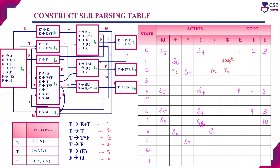For state I3, the final item is T derives F dot (production 4). Follow(T) = {+, *, ), $}, so we enter R4 for those columns. State I4 has no final item. For state I5, the final item is production 6. Follow(F) = {+, *, ), $}, so we enter R6 for those columns in state 5.